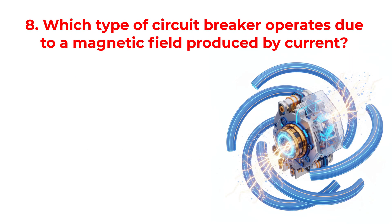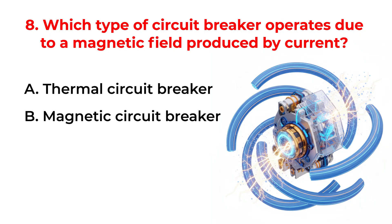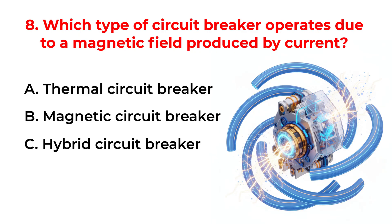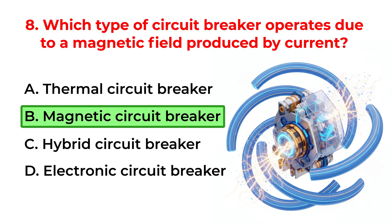Which type of circuit breaker operates due to a magnetic field produced by current? A. Thermal circuit breaker. B. Magnetic circuit breaker. C. Hybrid circuit breaker. D. Electronic circuit breaker. Correct answer is option B. Magnetic circuit breaker.